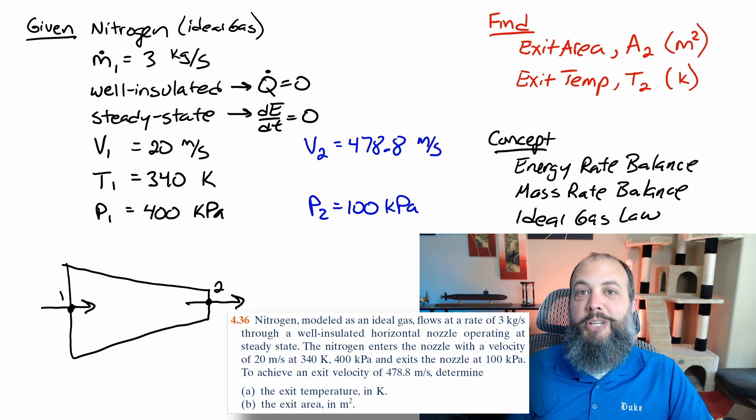This problem is going to use these three concepts: energy rate balance, because that's why we were told it was in steady state, so that we would know that dE/dt is zero. I know this is going to involve the mass rate balance, because we're looking for cross sectional area. The only equation where that is going to occur is in the volumetric flow rate or mass flow rate equation through a pipe. And then lastly, ideal gas law, because we were told it was nitrogen, though we could treat nitrogen as an ideal gas, so... Dead giveaway!